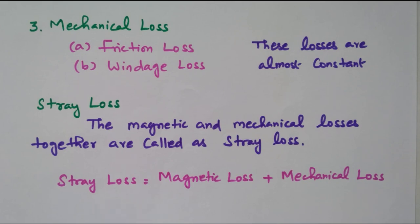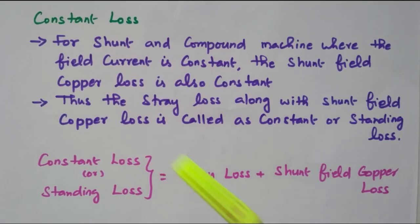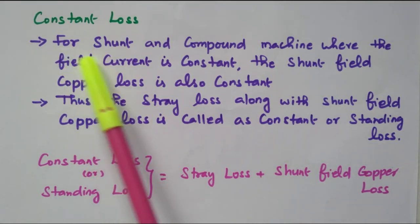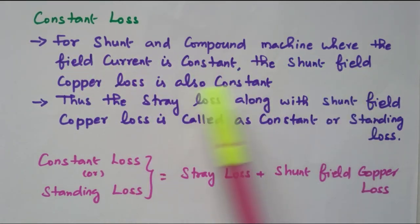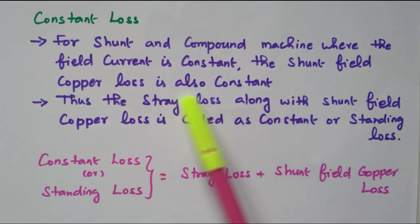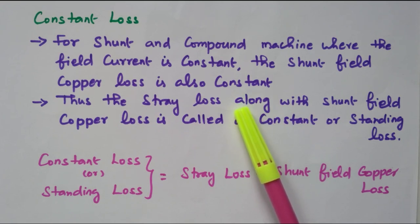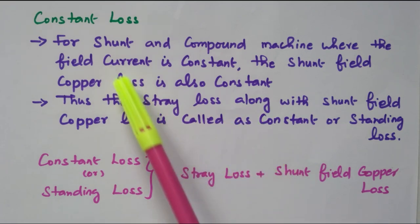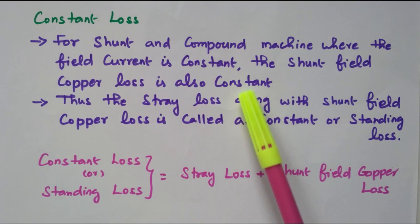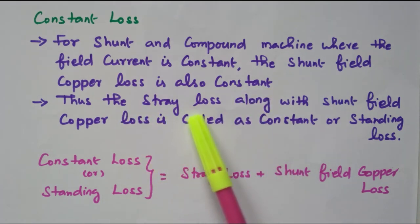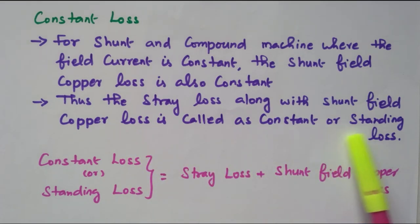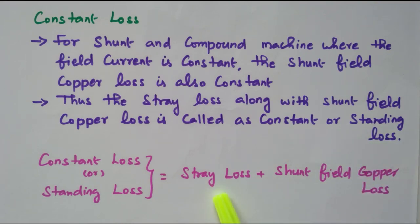Now we will go for further classification. We have one more constant loss. In shunt and compound machines where the field current is constant, the shunt field copper loss is almost constant. Only a very small amount of current flows through the shunt field winding, and it does not vary. So the stray loss along with the shunt field copper loss is called constant loss or standing loss. It will not vary with the load.